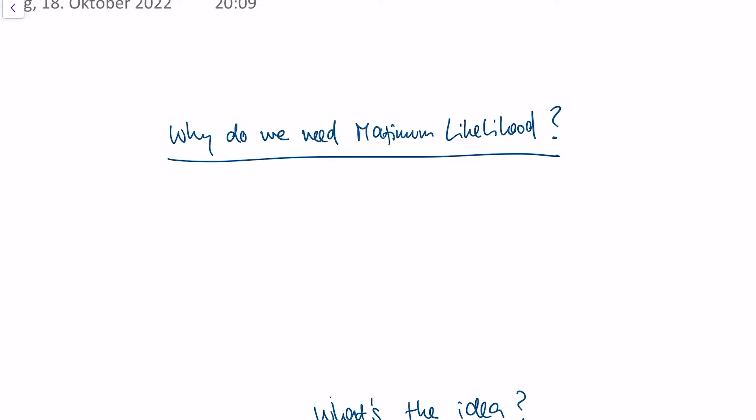Bernoulli distributed means I do something and I have a binary outcome. For instance, the US presidential election — either Donald Trump is going to win the election or Hillary Clinton. This is a classical Bernoulli event. In a Bernoulli event, there's the probability that Donald Trump wins, which may be pi, and the probability that Hillary Clinton wins, which has to be 1 minus pi.